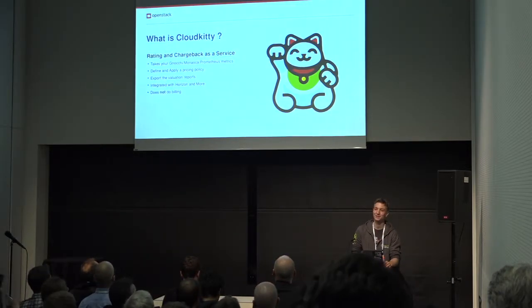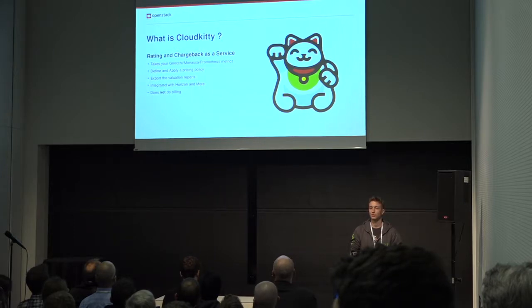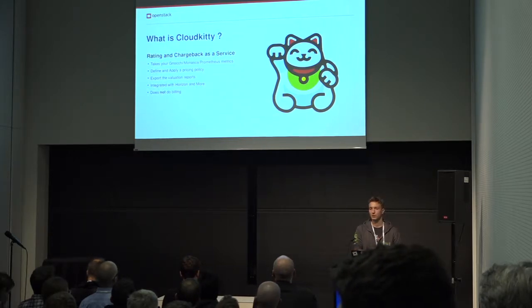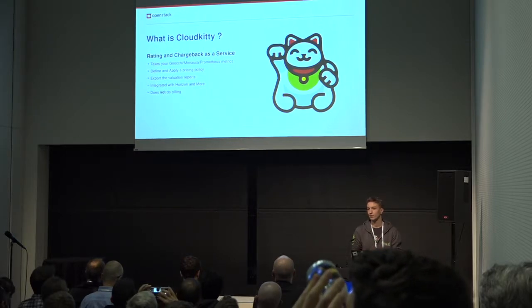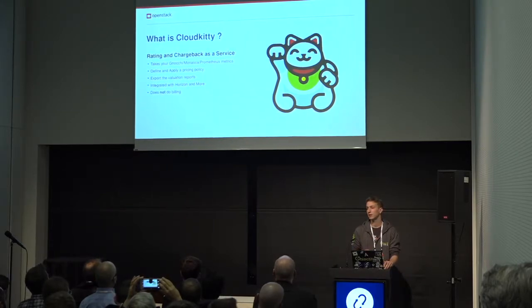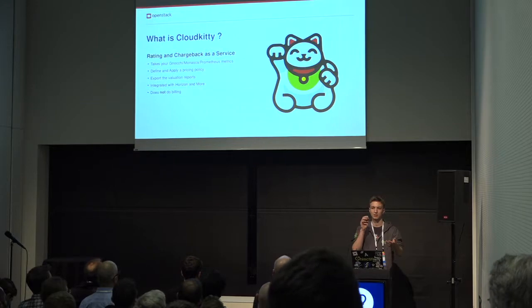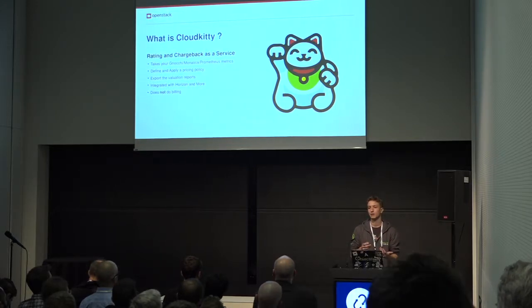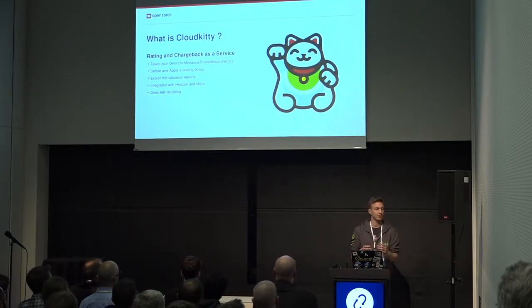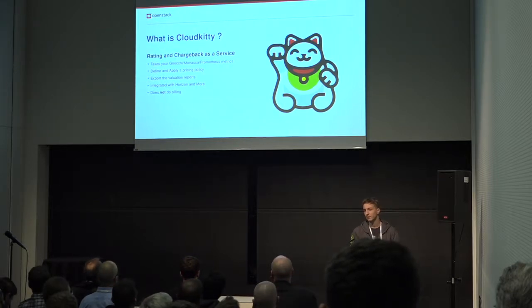So what is Cloud Kitty? Cloud Kitty is a rating and chargeback component for OpenStack. It takes your Gnocchi, Monasca, or Prometheus metrics and applies rating rules to them, which get committed to a storage backend and are available for you to retrieve, be grouped, and get a lot of nice information. It is not a billing solution, which means you can't apply taxes or convert euros to dollars. What we do is basically take your metrics, collect them the way you want, apply rating rules to them, and generate CSV records which can be injected into your own homegrown billing solution or whatever software you are using.